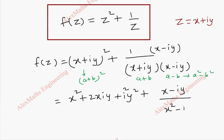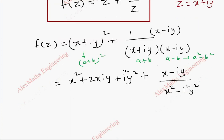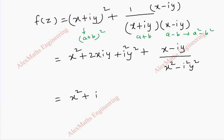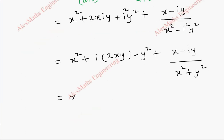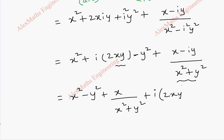Coming to the expansion: (x + iy)² = x² - y² + i·2xy since i² = -1. And 1/(x + iy) multiplied by (x - iy)/(x - iy) gives (x - iy)/(x² + y²). So grouping: the real part is x² - y² + x/(x² + y²), and taking i common for the imaginary part we get i times [2xy - y/(x² + y²)]. So this is our u + iv.